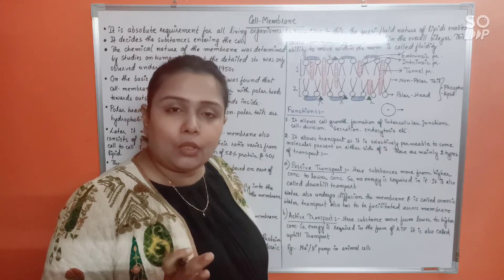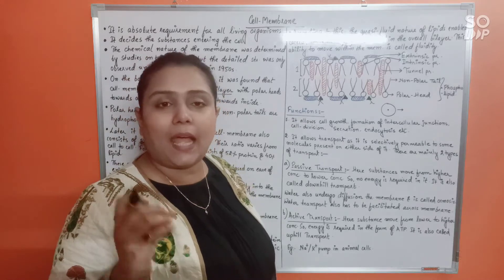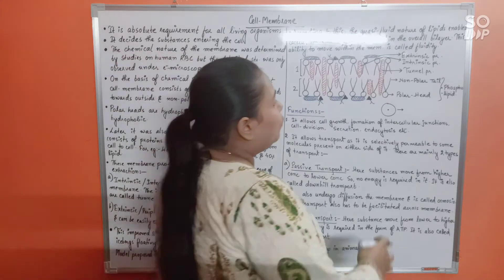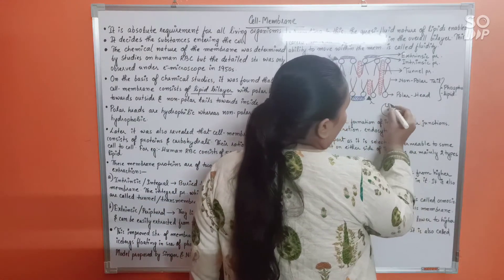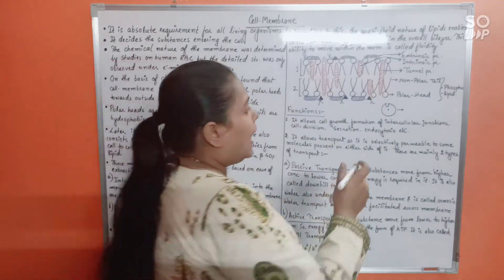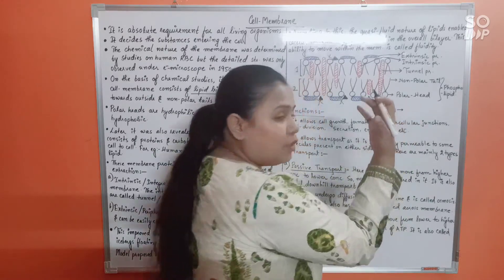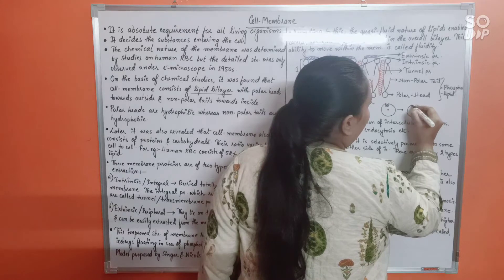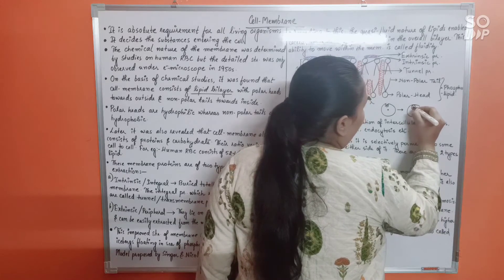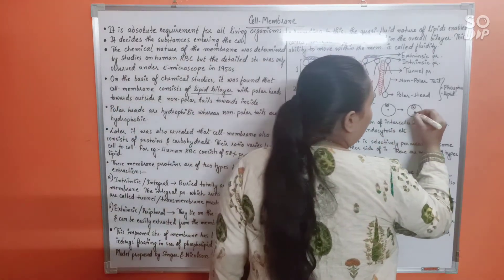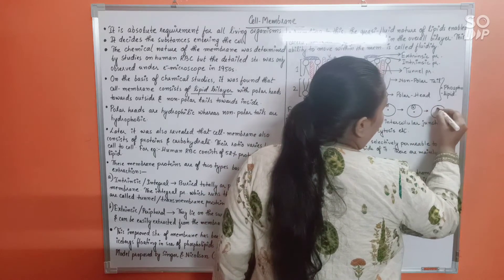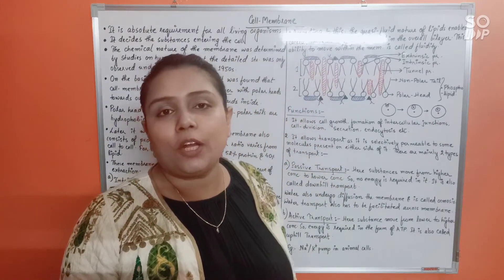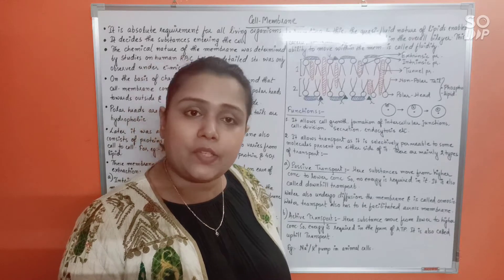If a large substance tries to pass through the plasma membrane, the membrane would rupture. Instead, the plasma membrane undergoes an invagination — an infolding — and the large substance falls into that infolding. Because the plasma membrane is fluid in nature, it seals off, forming a vesicle inside the cell. This vesicle containing the large substance is then pinched off from the plasma membrane.